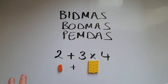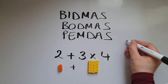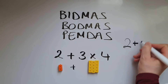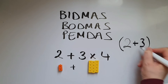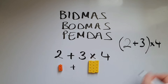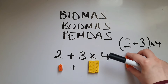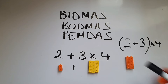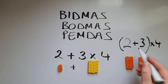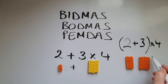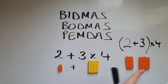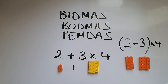If we had something like 2 add 3 times 4, that would be represented like this. So that's 2 columns, add 3 columns, and then multiply by 4 each, so there would be 4 in each of these columns. I hope this helps you understand why we do multiplication and division before we do addition and subtraction.